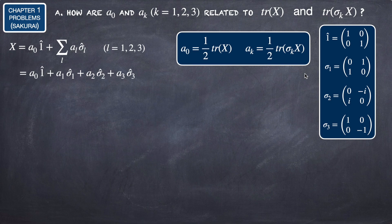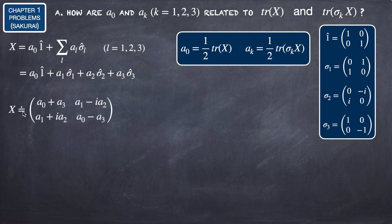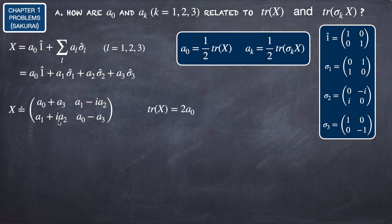We can also solve this problem using matrix notation. Writing X explicitly: A0 multiplying the identity gives diagonal elements A0 and A0; A3 multiplying sigma3 contributes A3 and minus A3 on the diagonal; A1*sigma1 gives A1 off-diagonally; and A2*sigma2 gives minus i*A2 and i*A2. The trace of X is simply 2*A0, exactly as we already found.